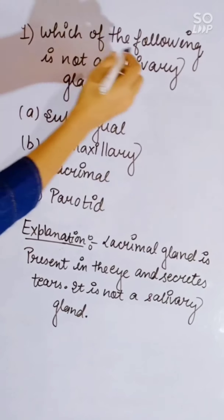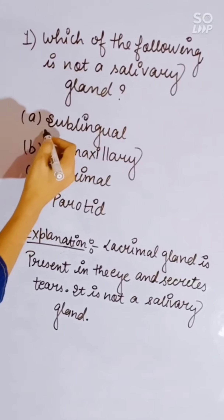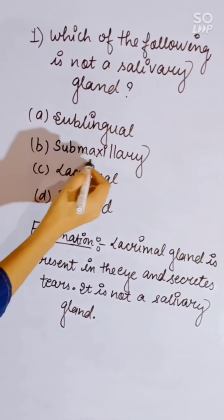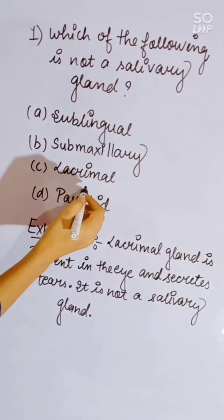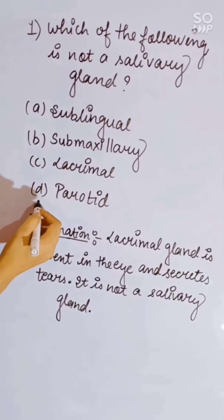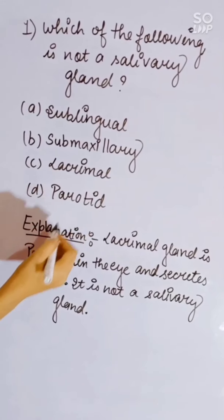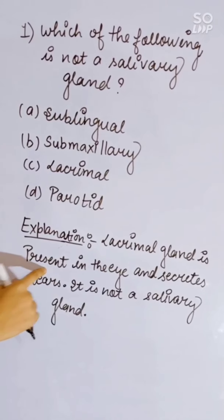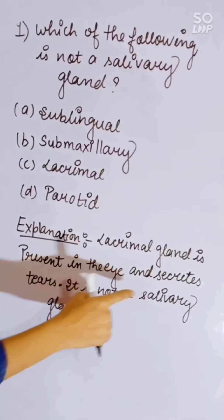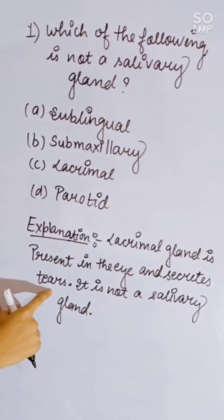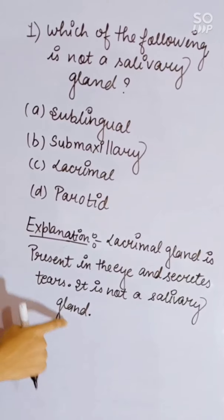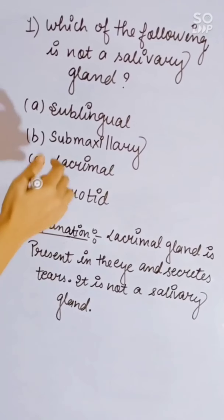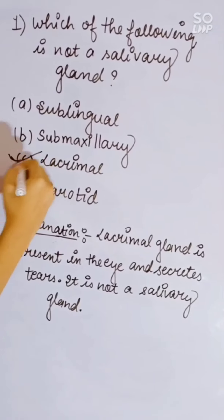Which of the following is not a salivary gland? Options: sublingual, submaxillary, lacrimal, or parotid. The lacrimal gland is present in the eye and secretes tears. It is not a salivary gland. Correct answer is lacrimal.